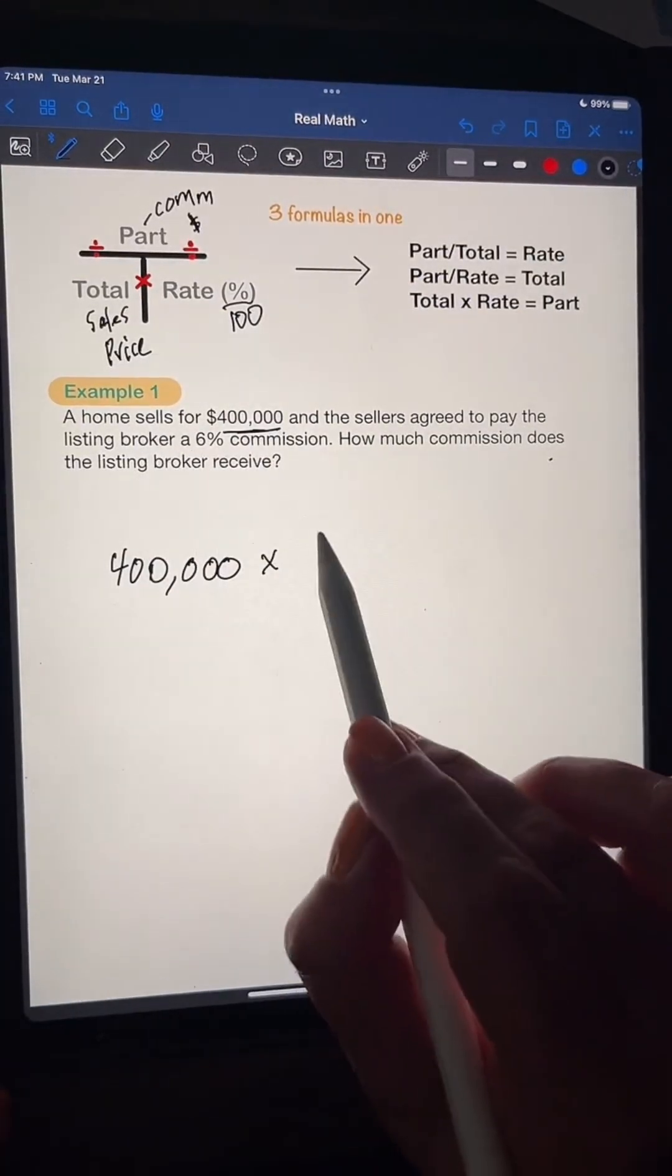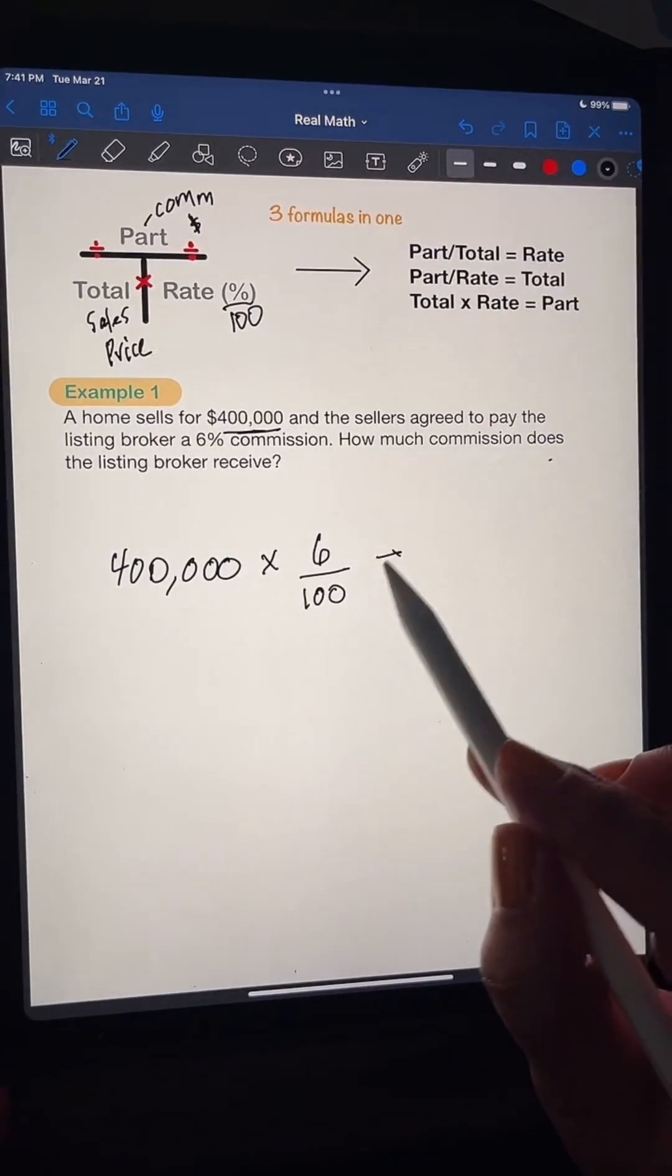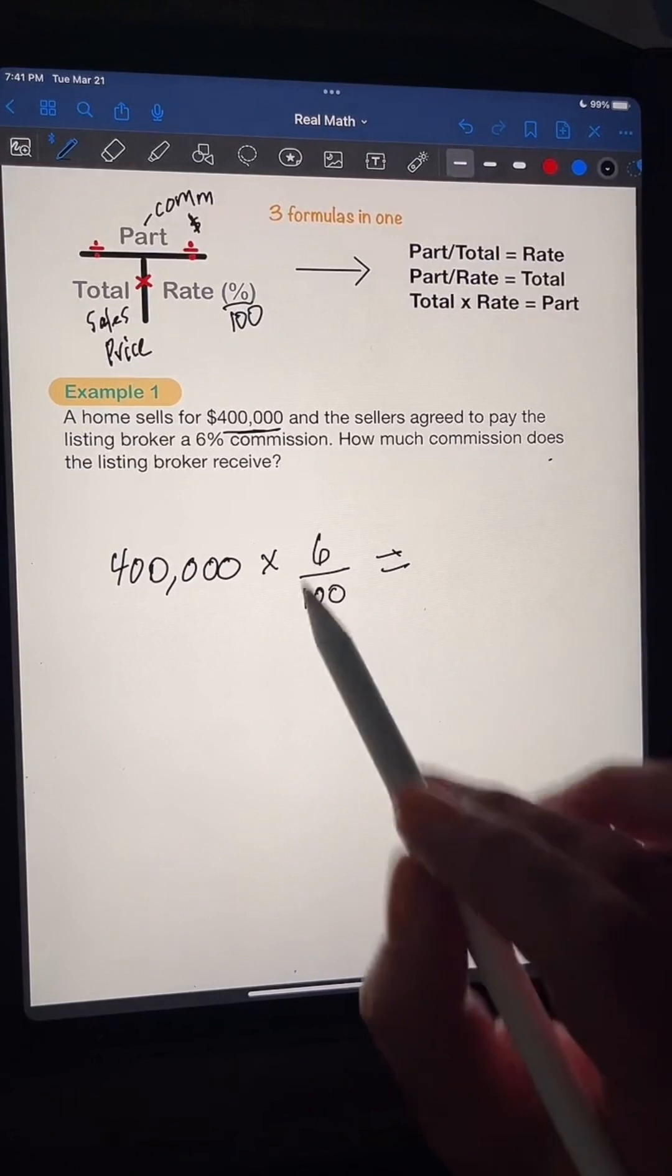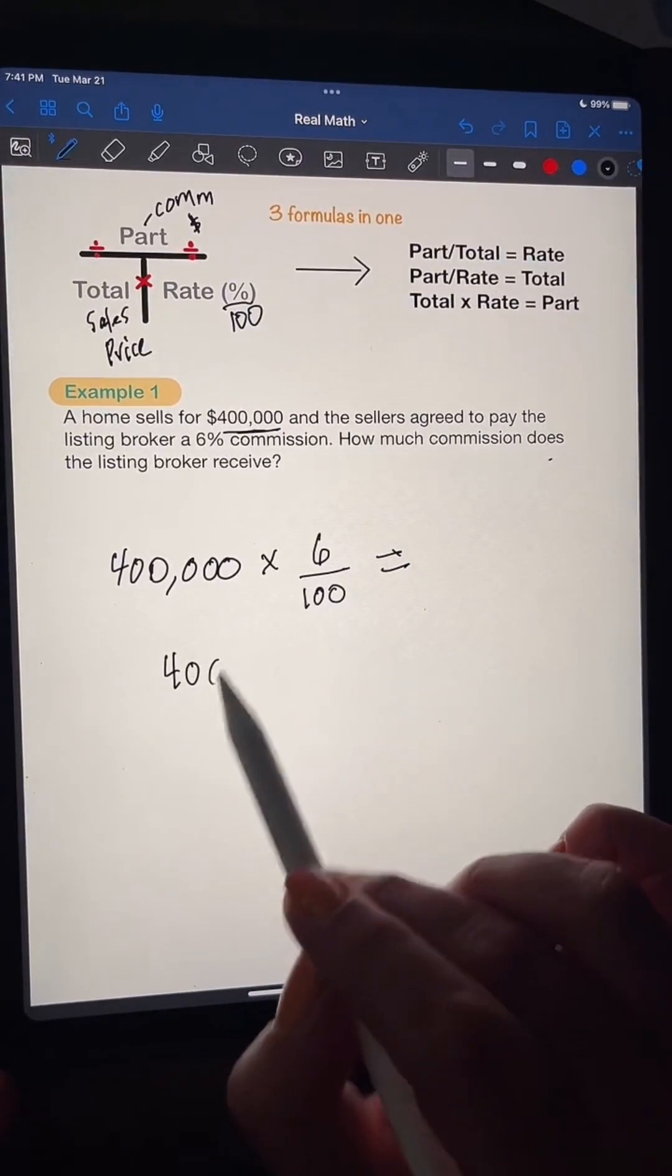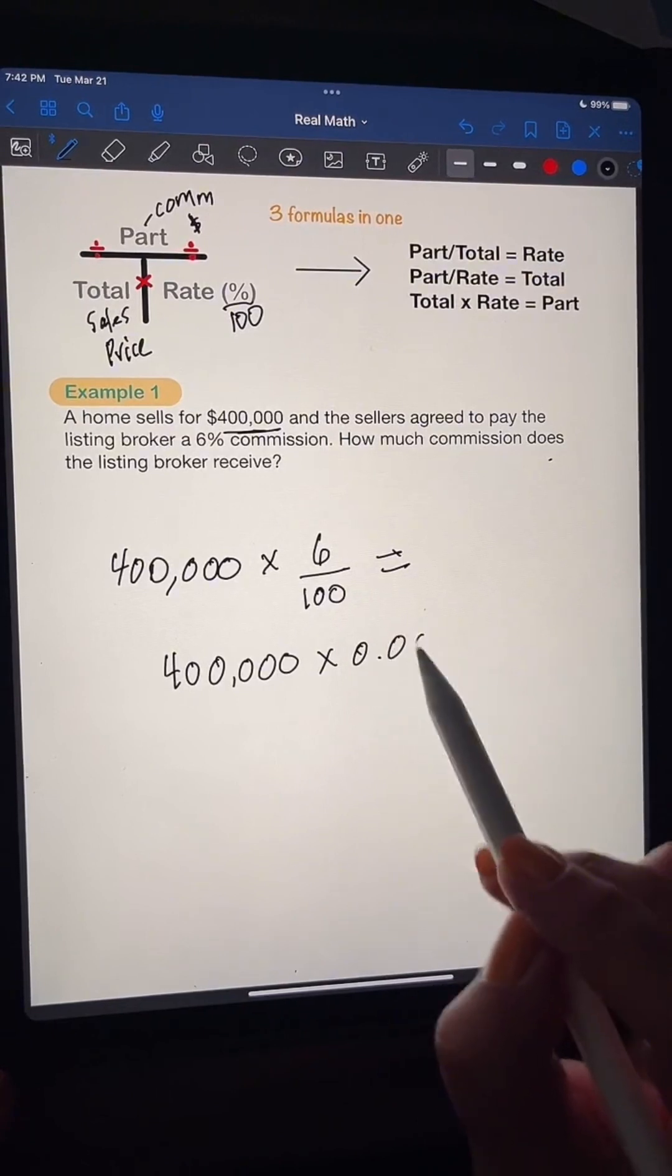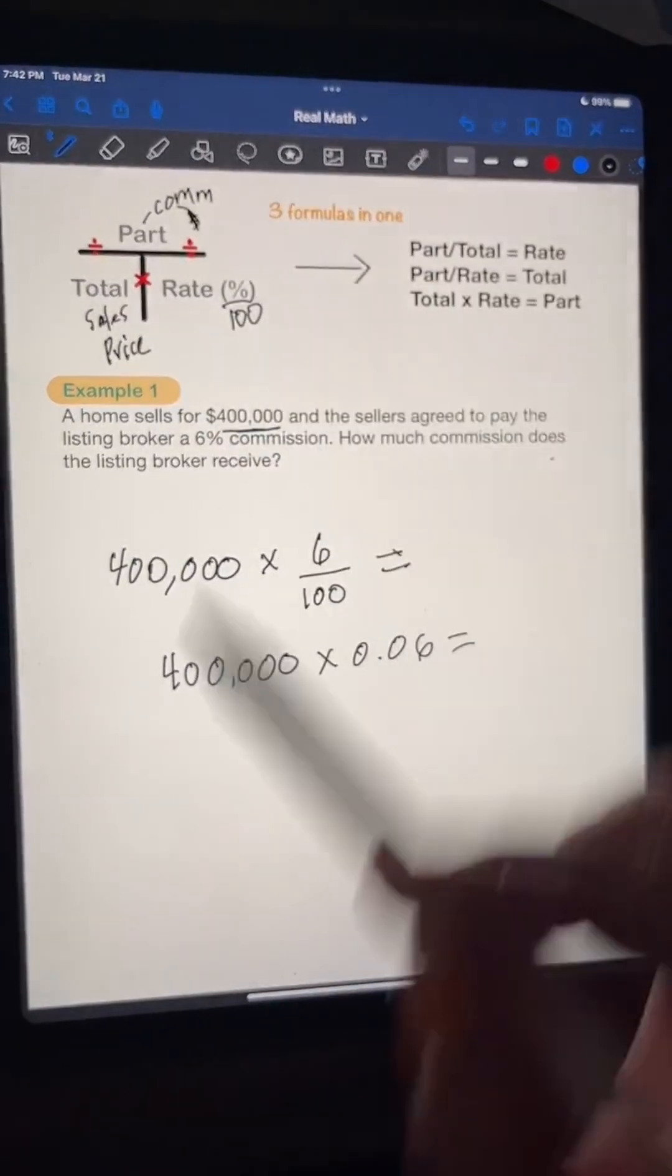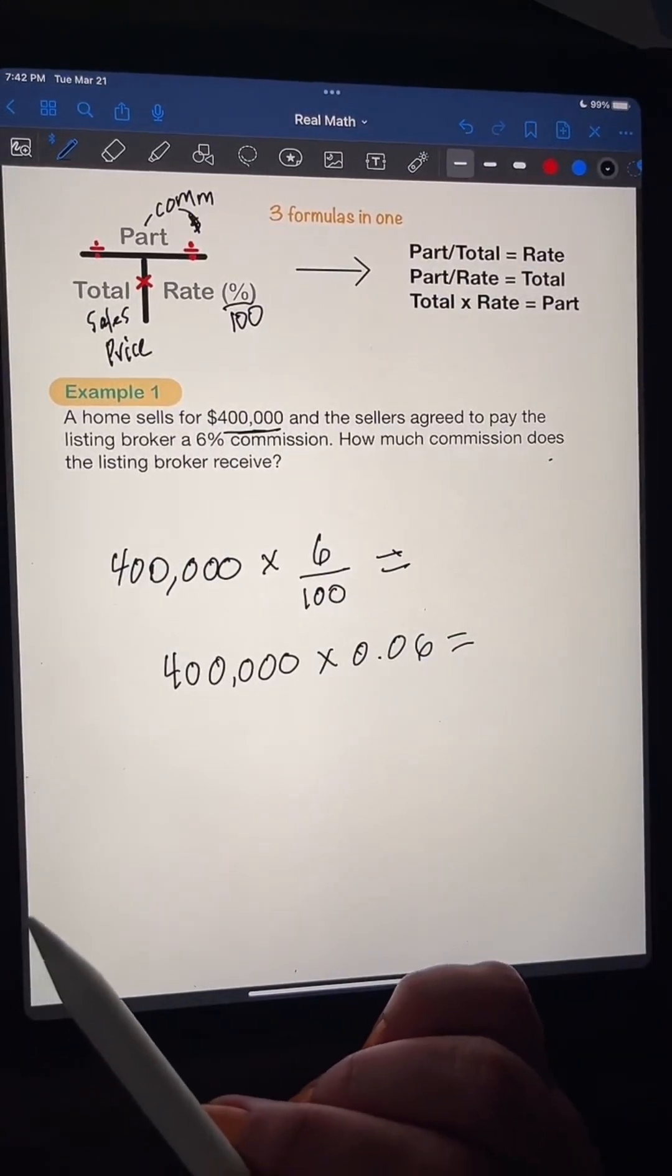So 6%. Put that over 100. And then multiply. But I would do this first. So it would be $400,000 times 0.06. Okay? And that's going to give me my commission amount.